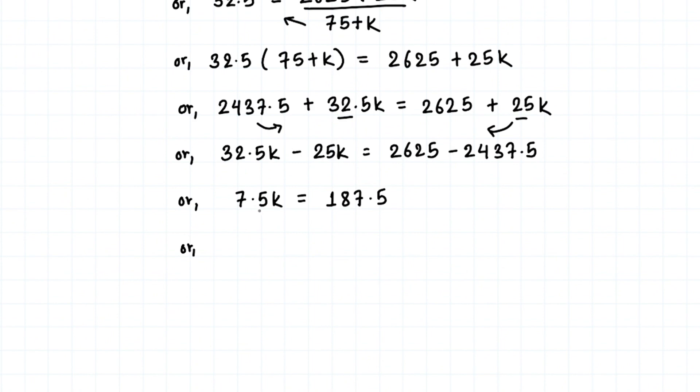This gives us 7.5k equals 187.5. Moving 7.5 to the other side, we get k equals 187.5 divided by 7.5. Therefore, the value of k is 25.